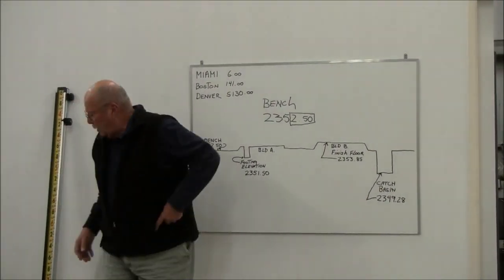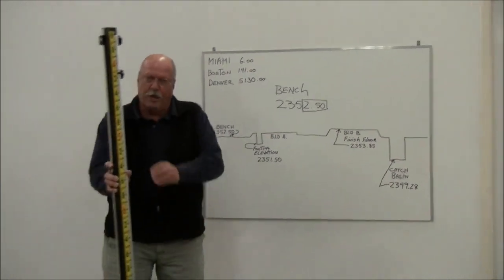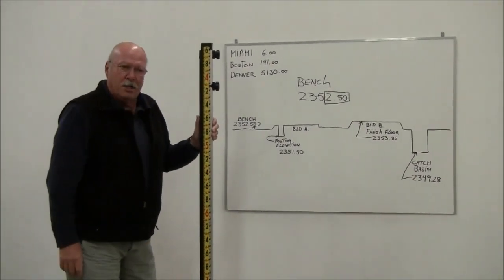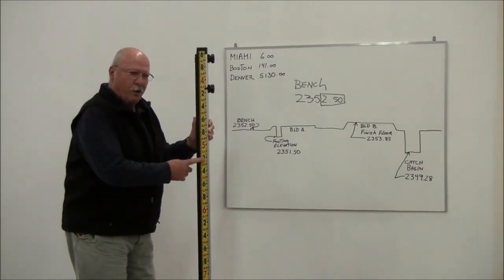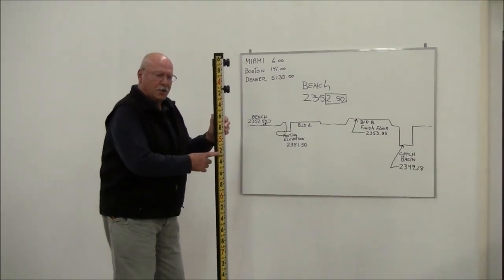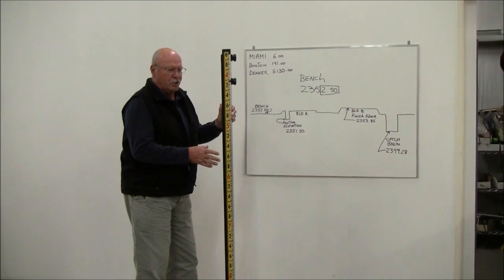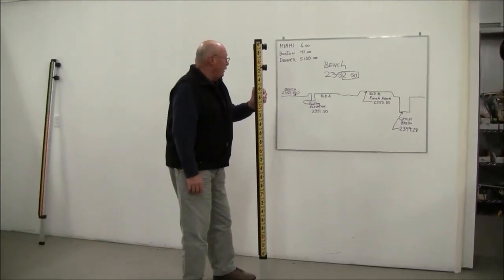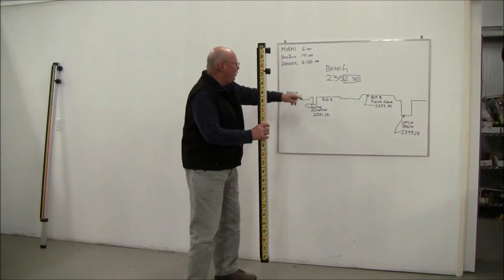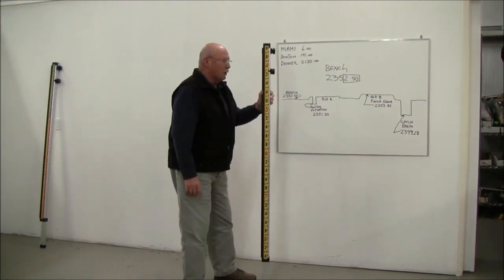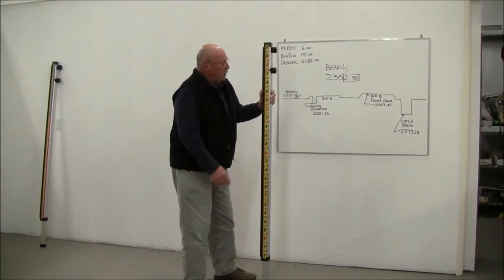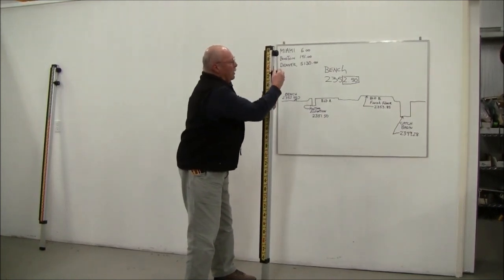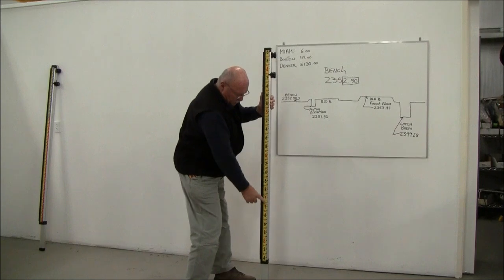So what I'll do is this is a direct reading rod right here. We happen to make 16 different models. This is a 10-foot rod in feet, tenths, and hundredths. That's how many jobs are set up, probably most jobs. And by the way, this true elevation is elevation above mean sea level. So the first thing you'll notice about this grade rod is that, well, the numbers are, they're not going the same way as a normal grade rod.